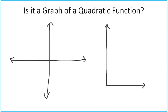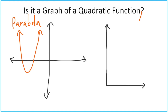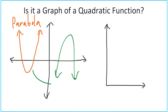The last thing to look at is: is it a graph of a quadratic function? If it's a graph, it would look like a parabola. If your graph is a parabola, then you have a quadratic function. Parabolas can open upward or downward.